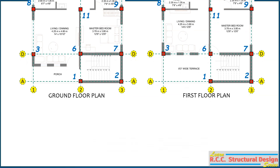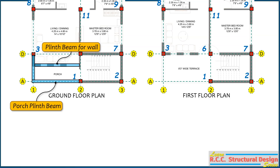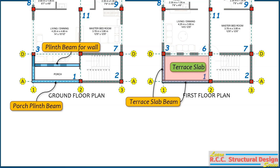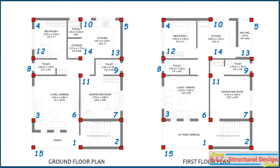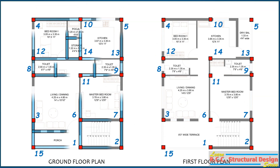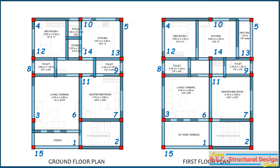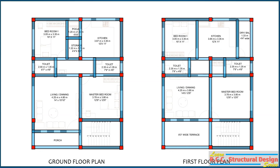Now at the ground floor, we require plinth beams to support the wall of the living-cum-dining room and the terrace slab beam at the first floor. So if we add a column at the intersection of grid line 1-1 and AA, it can support the terrace slab beam at the first floor and the plinth beam at the ground floor. Add column number 15 at this intersection. Once again, check the feasibility of the column positions by drawing beams under walls at both ground floor and first floor. After finalizing the column positions, renumber the columns from left to right and bottom to top.